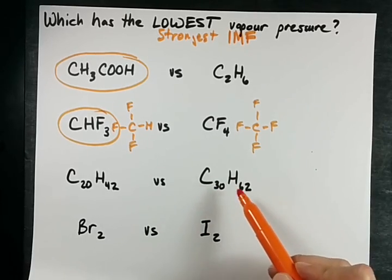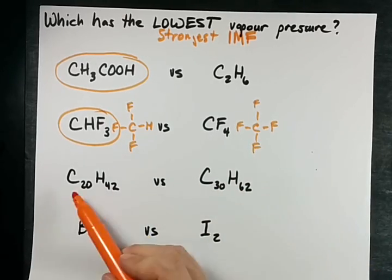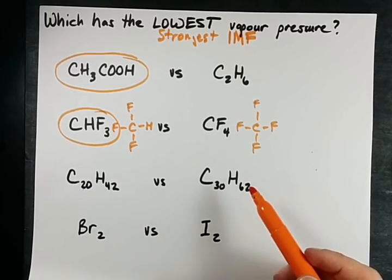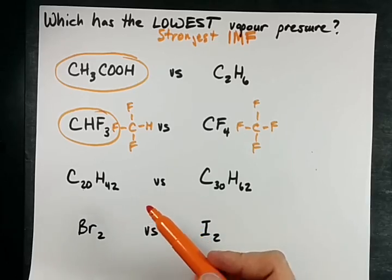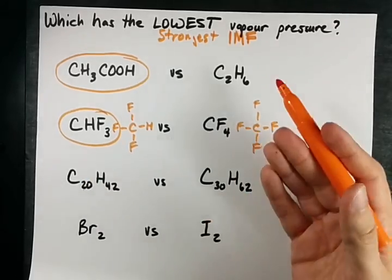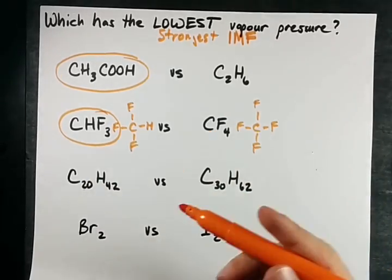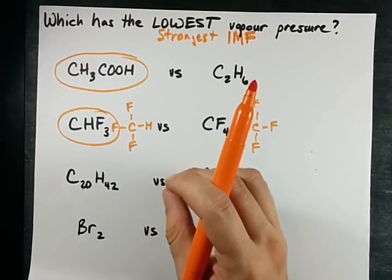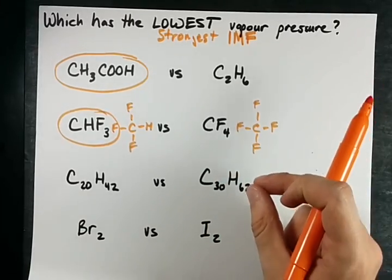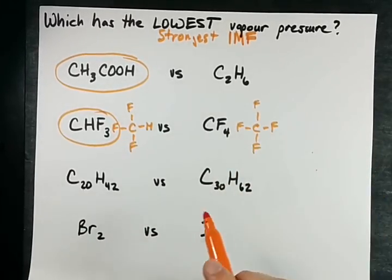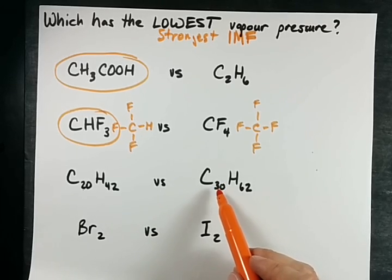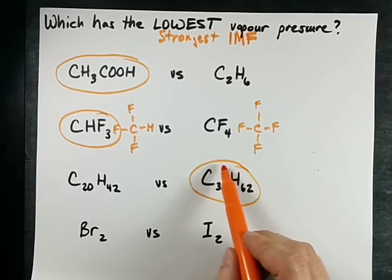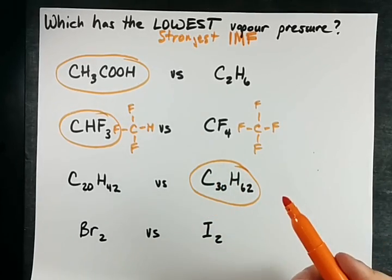C₂₀H₄₂ versus C₃₀H₆₂. No hydrogen bonding for either of them, and carbon-hydrogen bonds are generally non-polar, so neither of them has dipole-dipole forces either. But London dispersion forces say that, in general, bigger molecules have stronger London dispersion forces. So stronger London dispersion forces, stronger intermolecular forces, lower vapor pressure. Pretty cool.